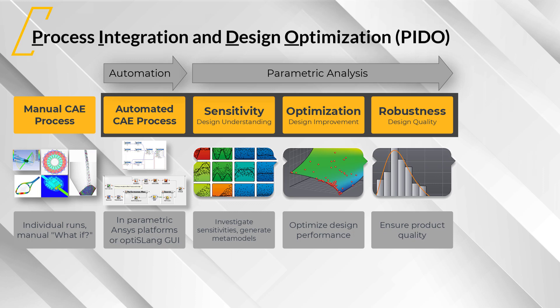Once you learn about your design and know the options, you can conduct an optimization with the relevant parameters. After you find your best design, you check the design quality with a robustness and reliability analysis. For that, we assume scattering for all relevant parameters that occur in production, manufacturing, or the environment. If the design is not robust, you must go back to optimization and find a new optimum. If the design quality is fine, you have successfully found a robust design. The combination of optimization and robustness evaluation leads to a robust design optimization strategy, meaning an optimized and simultaneously robust design is identified.